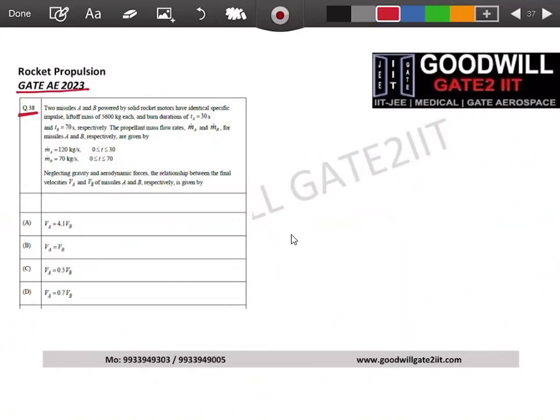Two more questions left guys, 2023 and 2024. Let's finish this. Two missiles A and B powered by solid rocket motors have identical specific impulse. So I always have a habit of doing this when they say two, I will divide my sheet. They have same specific impulse, so let's say Isp is same for both.